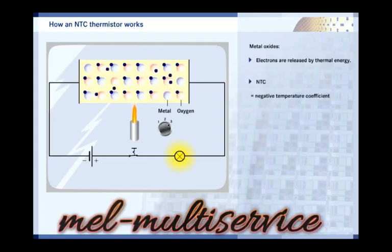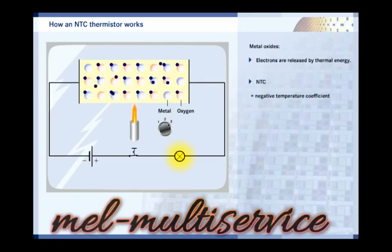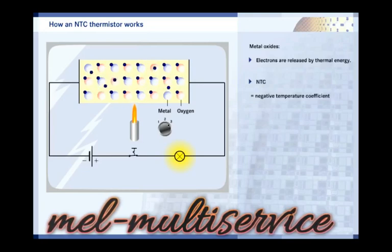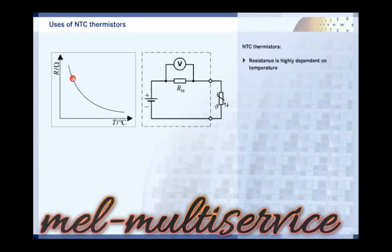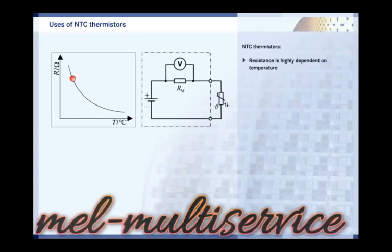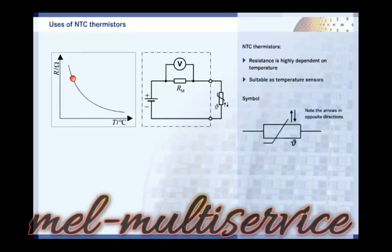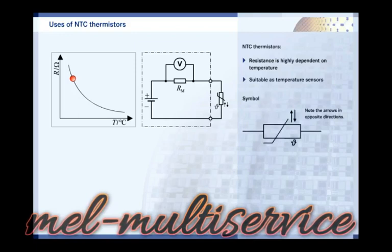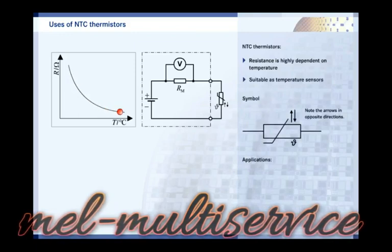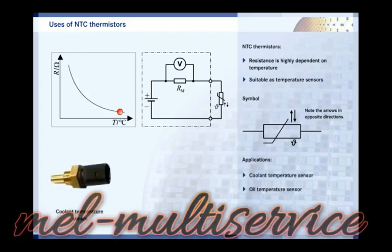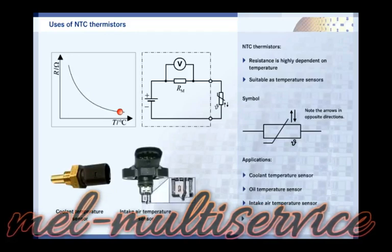For this reason, they are called NTC thermistors. NTC stands for negative temperature coefficient. The relationship between temperature and resistance is expressed by the characteristic curve of NTC thermistors. Arranged in a resistance measuring circuit, they can be used to measure temperature. NTC thermistors are used in vehicles where temperatures have to be measured, as coolant and oil temperature sensors, as intake air temperature sensors, and so on.